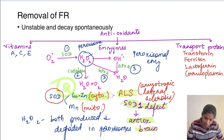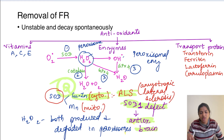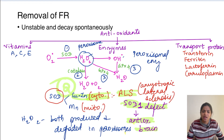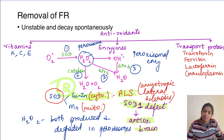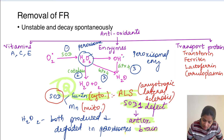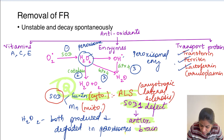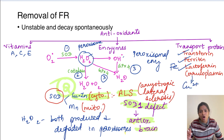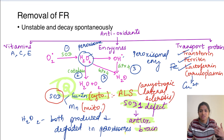Another type of antioxidant is transport proteins. As mentioned in Fenton's reaction, iron is involved, and other metals like copper can also lead to free radical formation. Normally, iron and copper are bound to their transport proteins and not available in free form, preventing free radical formation. Iron is associated with ferritin and lactoferrin, while ceruloplasmin binds and transports copper. A decrease in these transport proteins leads to increased trace metals, resulting in free radical injury.